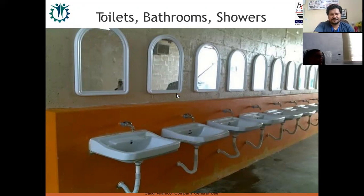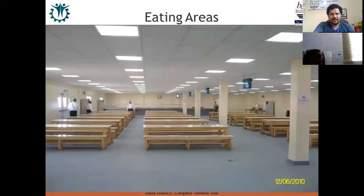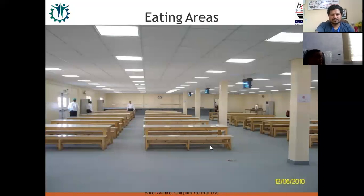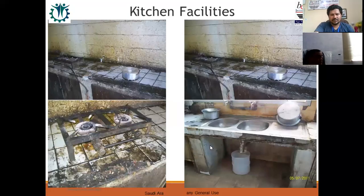A few more examples: eating areas — there shouldn't be any floor damage or chance of pests, and look at the electric fly killers and lights. On the other side, imagine if kitchen facilities look poorly maintained.